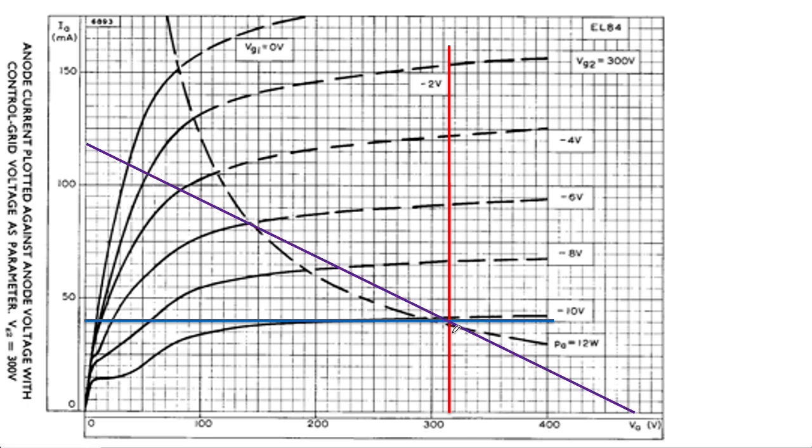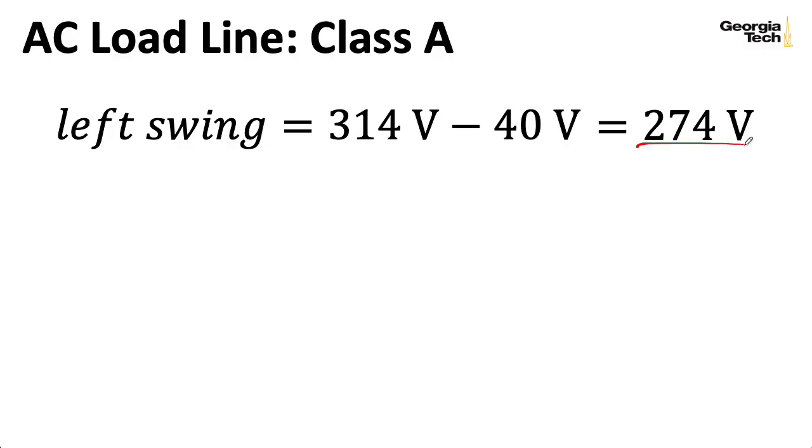I get a line that looks like this purple line here. Notice that it passes through the DC operating point, as well it should. If it doesn't, it means we did something wrong somewhere. So, I can trace this purple line along and see where it intersects the grid to cathode equals zero volt line. That's our operating limit. And if I draw a line in to find that, I'll call that to be something like 40 volts. So, we can swing from 314 volts down to 40 volts. So, my left swing limit is 274 volts.